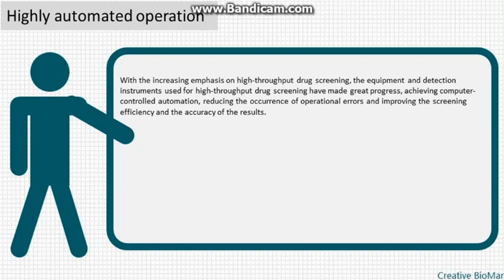Highly automated operation: with the increasing emphasis on high throughput drug screening, the equipment and detection instruments used have made great progress, achieving computer-controlled automation, reducing the occurrence of operational errors, and improving the screening efficiency and accuracy of results.